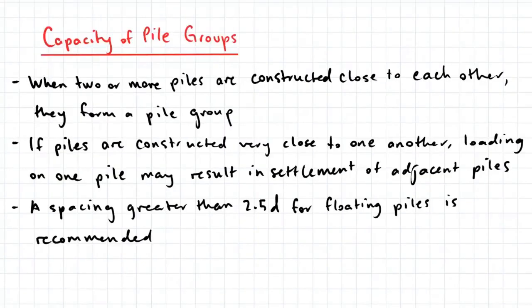When two or more piles are constructed close to each other, they form a pile group. If the piles are constructed very close to one another, loading on one pile not only induces settlement on the pile itself, but it may also result in the settlement of the adjacent piles, and as a result a reduction in their capacity. A spacing greater than 2.5 diameters for floating piles is generally recommended.